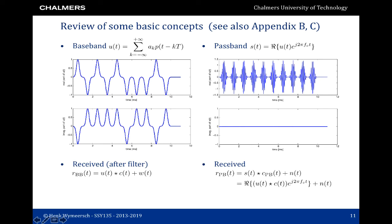We see that the real part has a non-zero value while the imaginary part is zero because of the real operator. The received passband signal is the transmitted passband signal convolved with the corresponding passband channel plus noise, and we can relate the received baseband and passband signal through an equation involving the complex baseband signal, the complex channel, and the carrier frequency.